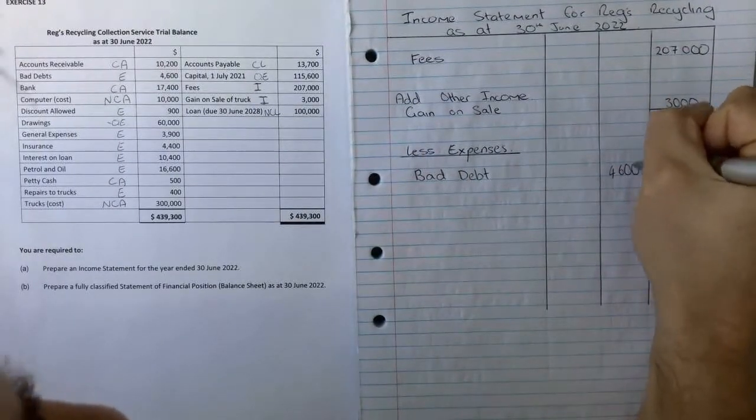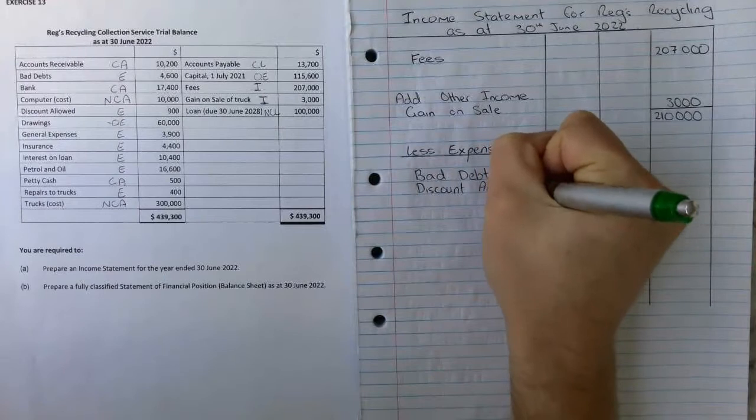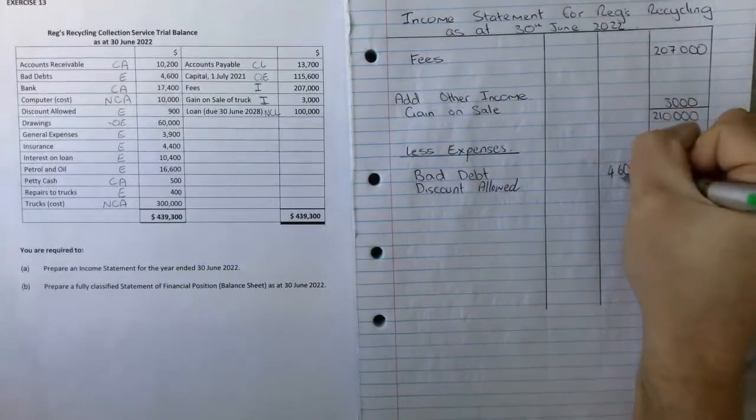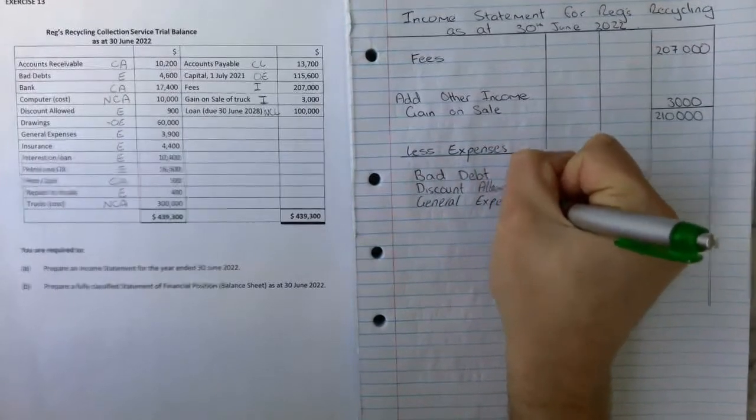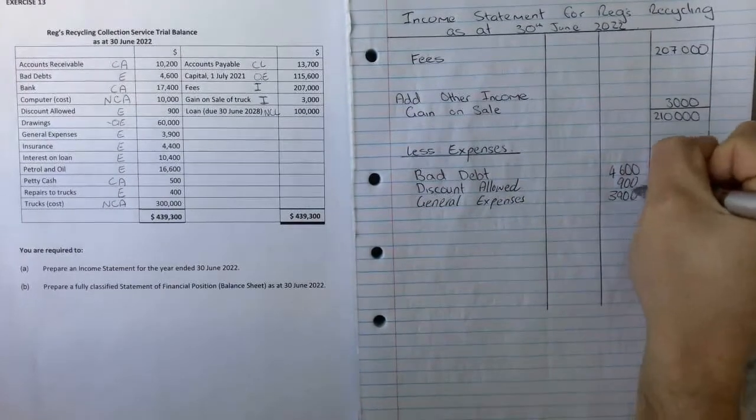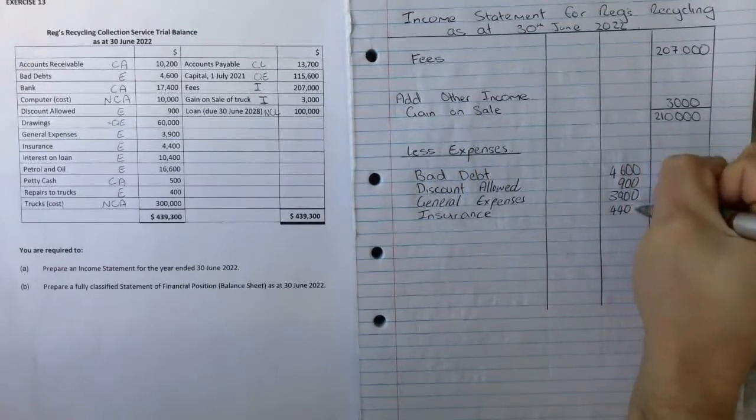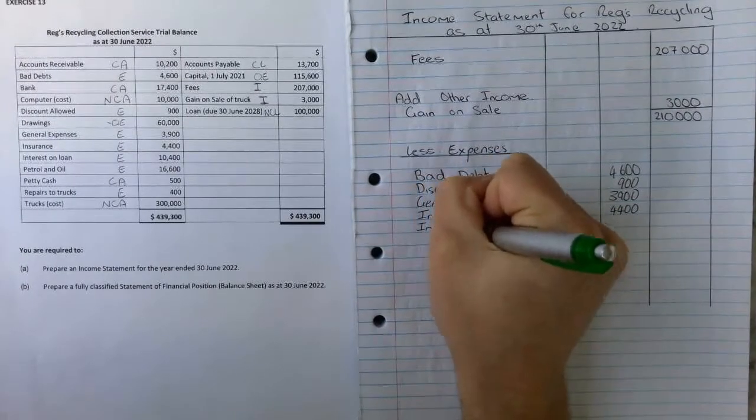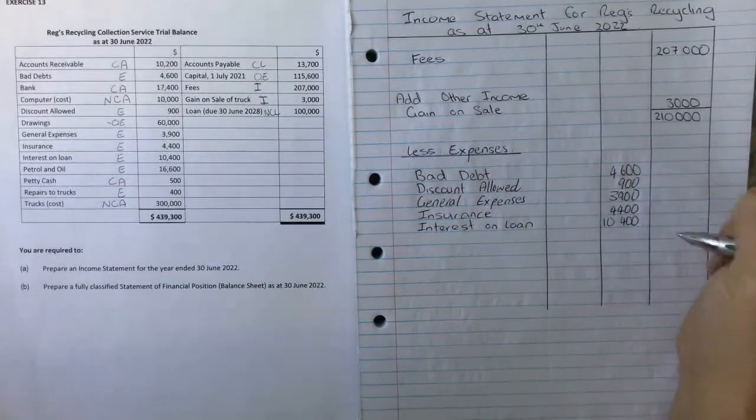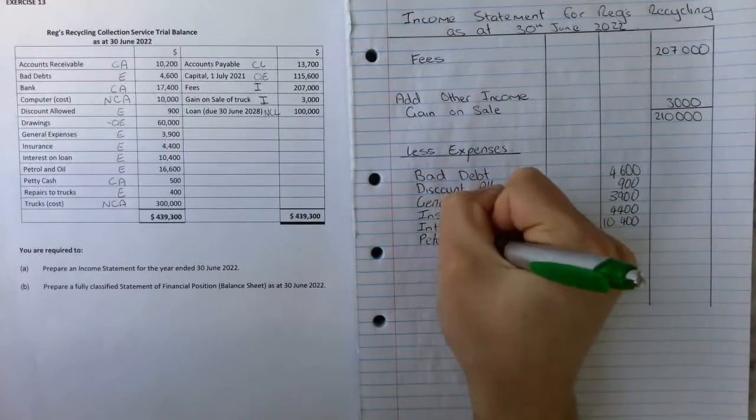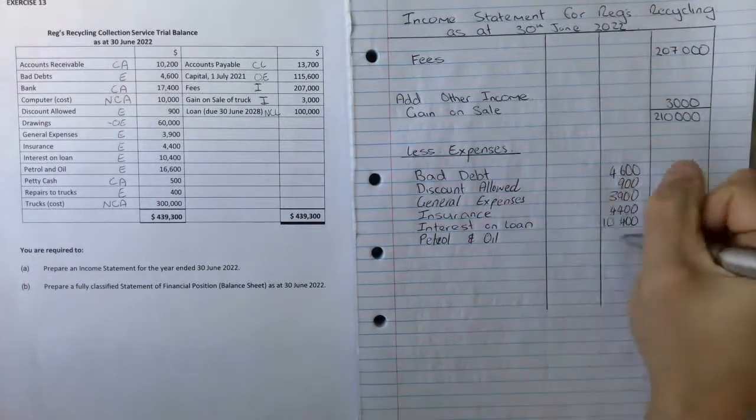Bad debt $4,600. Discount allowed $900. General expenses $3,900. Insurance $4,900. Interest on loan $10,400. Petrol and oil $1,600. Repairs on truck $14,900.